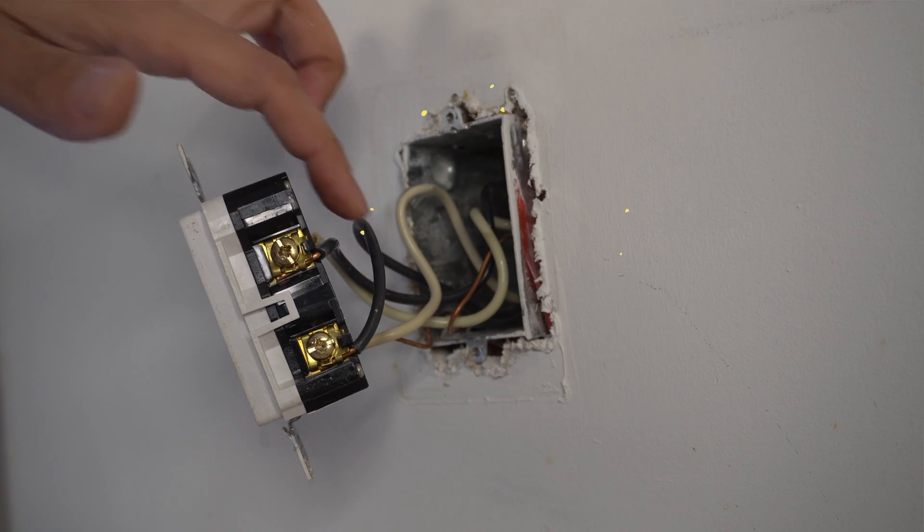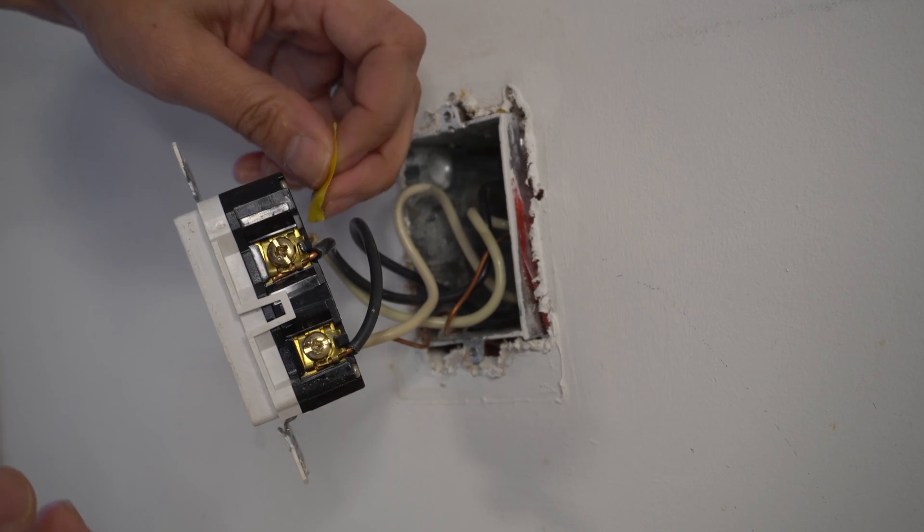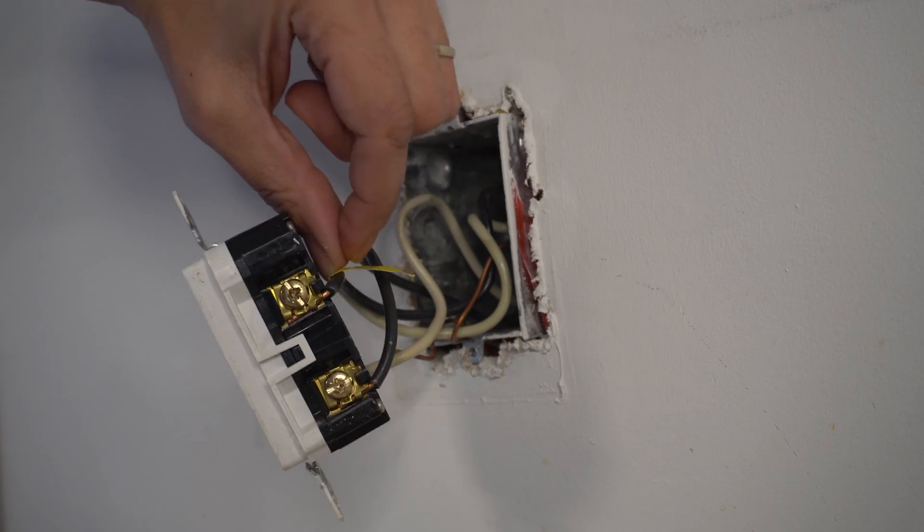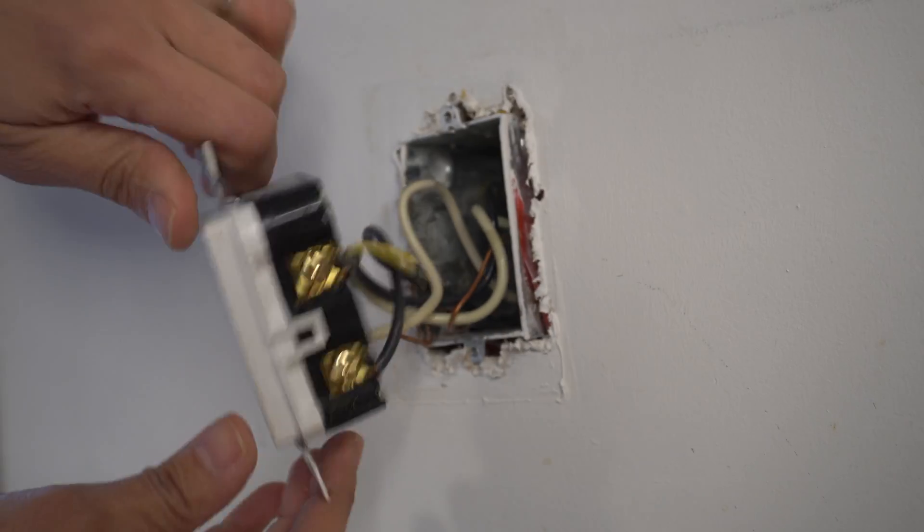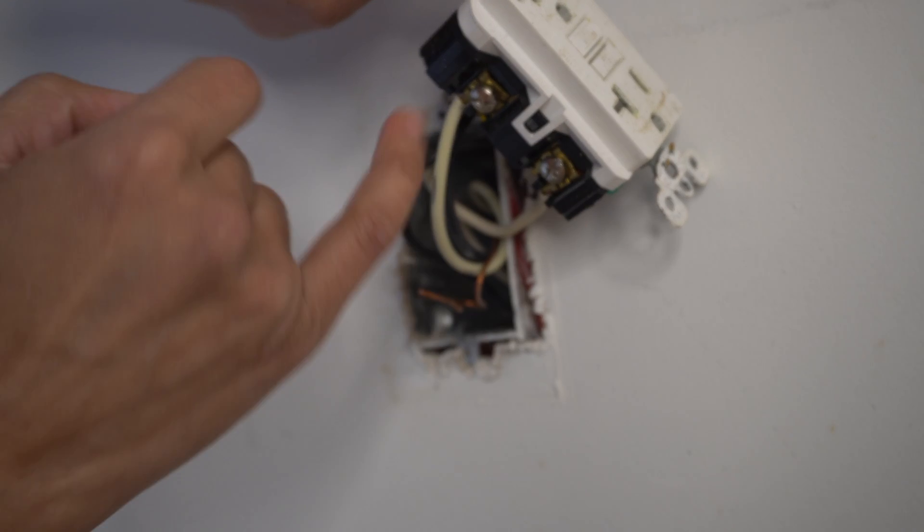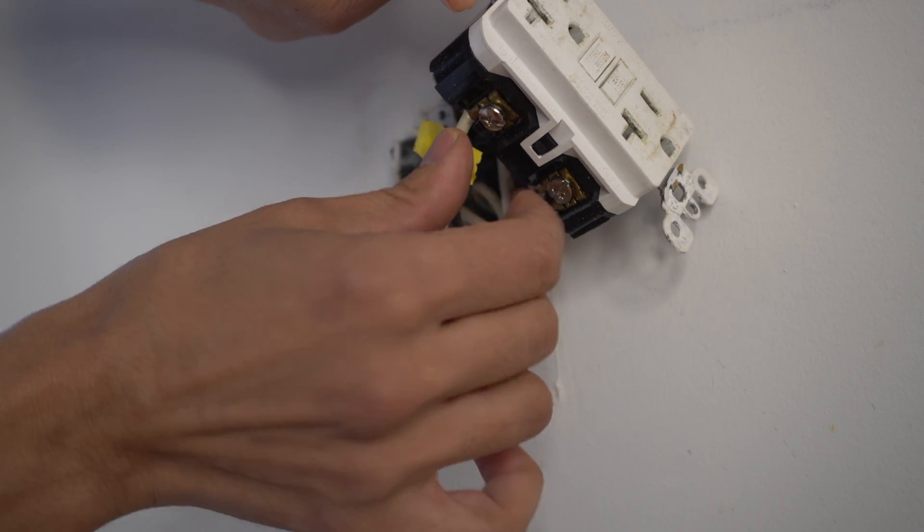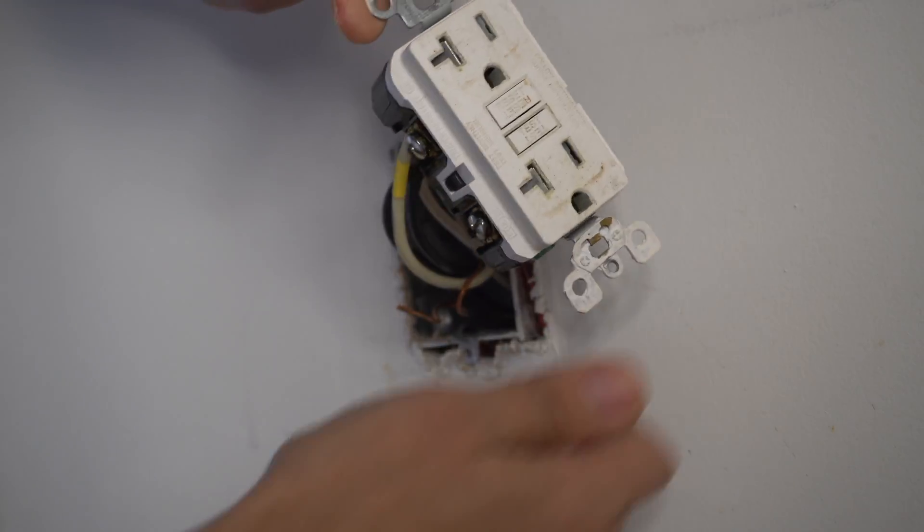The first thing we want to do is identify the wires at the top. This is our line. Line is really important with GFCIs so I've just marked the top there and on the other side I'm going to mark the wire that's coming into the top screw there with electrical tape. This is going to make things a lot simpler for us coming up.